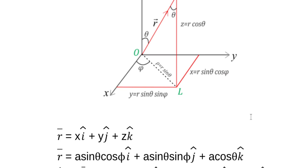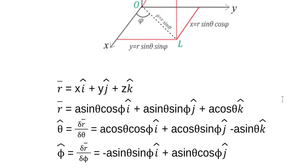We do that and we get this expression. Now what we need to continue is to find the basis vectors for our two components, theta and phi. The basis vectors are defined as the partial derivative of the position vector with respect to its coordinates — theta and phi — so we take the partial derivative with respect to theta, and then phi, and we get this expression.